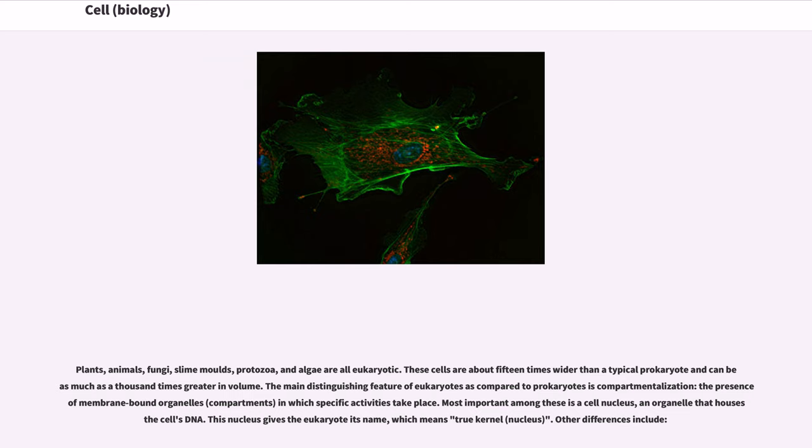The main distinguishing feature of eukaryotes as compared to prokaryotes is compartmentalization, the presence of membrane-bound organelles or compartments in which specific activities take place. Most important among these is a cell nucleus, an organelle that houses the cell's DNA. This nucleus gives the eukaryote its name, which means true kernel or nucleus.